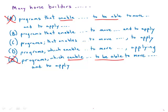So that leaves us with B, C, and D. These programs allow the people to do two things, and these two things have to be in parallel. Remember the GMAT is in love with parallel structure. So those two things are to move and to apply. That's perfect parallel structure.